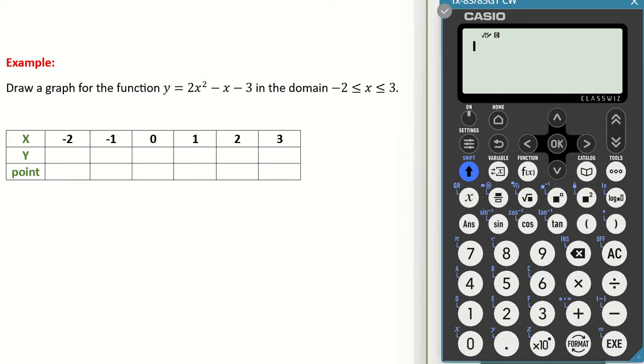Before you begin though, I would advise that you clear or reset your calculator before beginning. So the example we're going to look at here is draw a graph for the function y = 2x² - x - 3 in the domain -2 ≤ x ≤ 3. Now in the domain just basically means between those two values, -2 and 3.